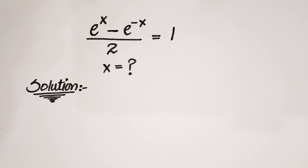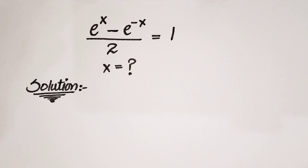Hello everyone, welcome back to a math club. We have a question: e raised to power x minus e raised to power minus x, all over 2, which is equal to 1. We have to find the value of x here.